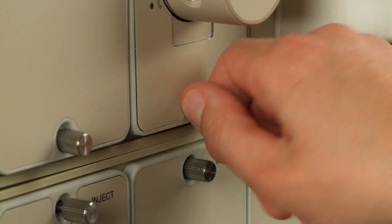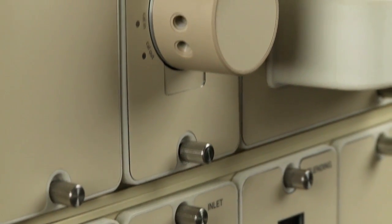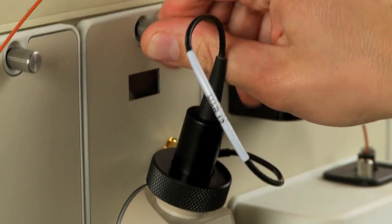Secure the module in its bay by tightening the two captive screws. Do not over-tighten these screws.